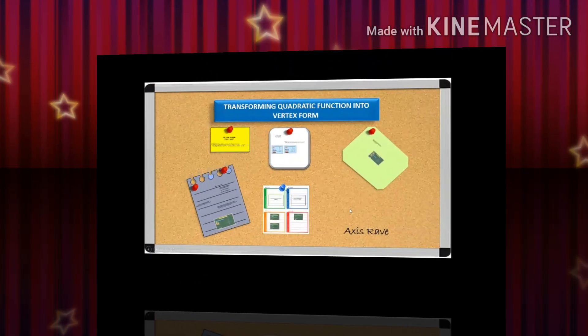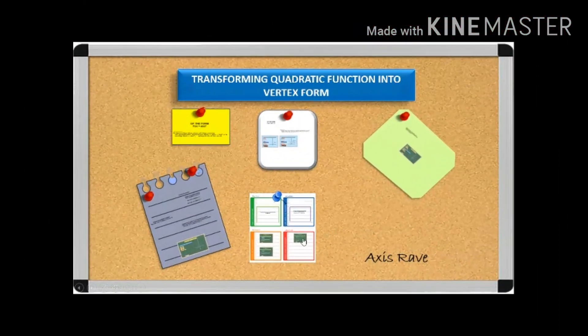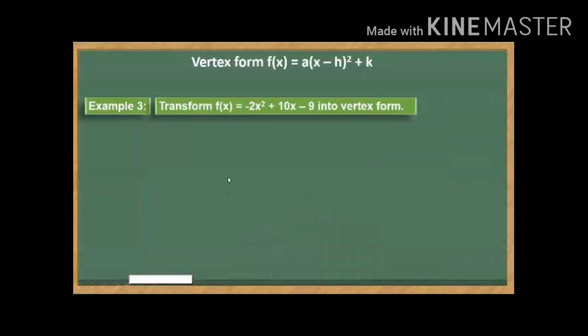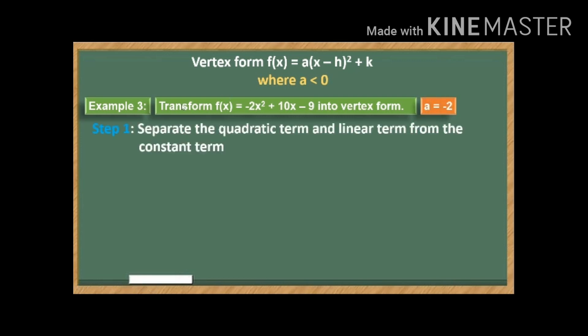Here is our example number 3. So we have here, transform negative 2x squared plus 10x minus 9 into vertex form. Our a is equal to negative 2 or less than 0.